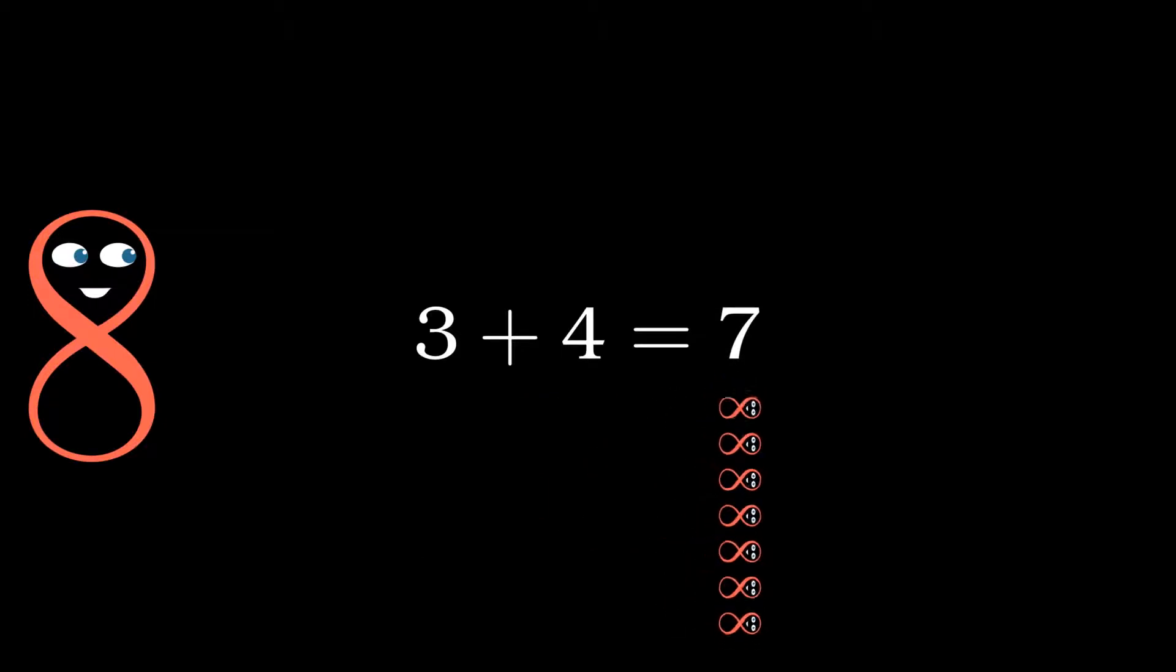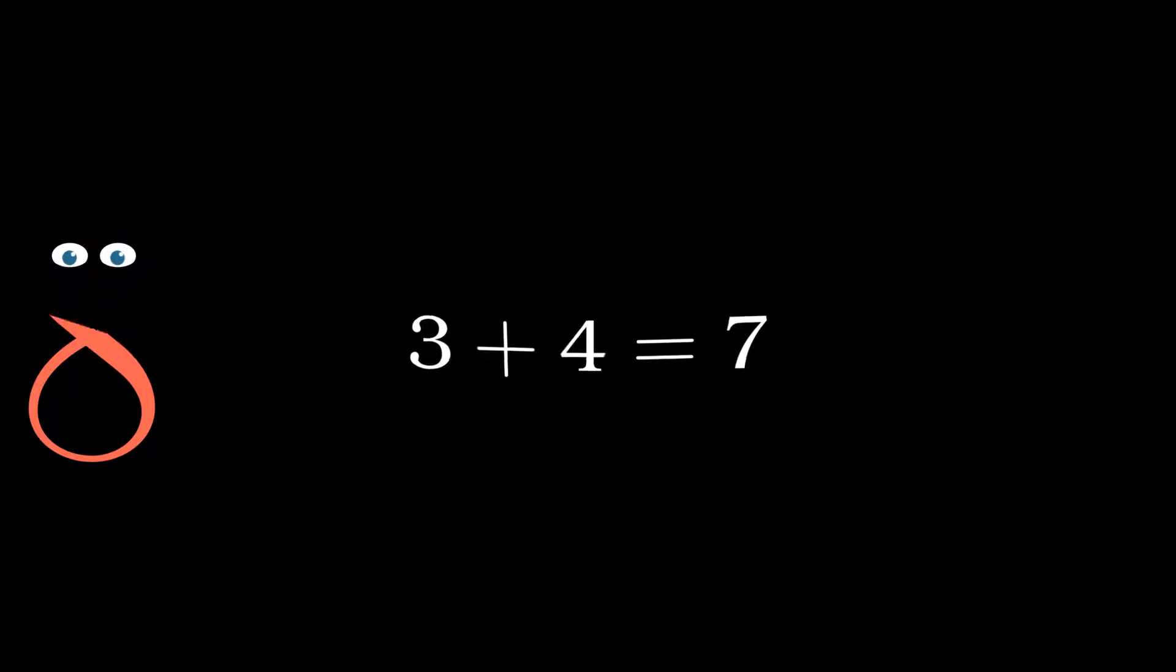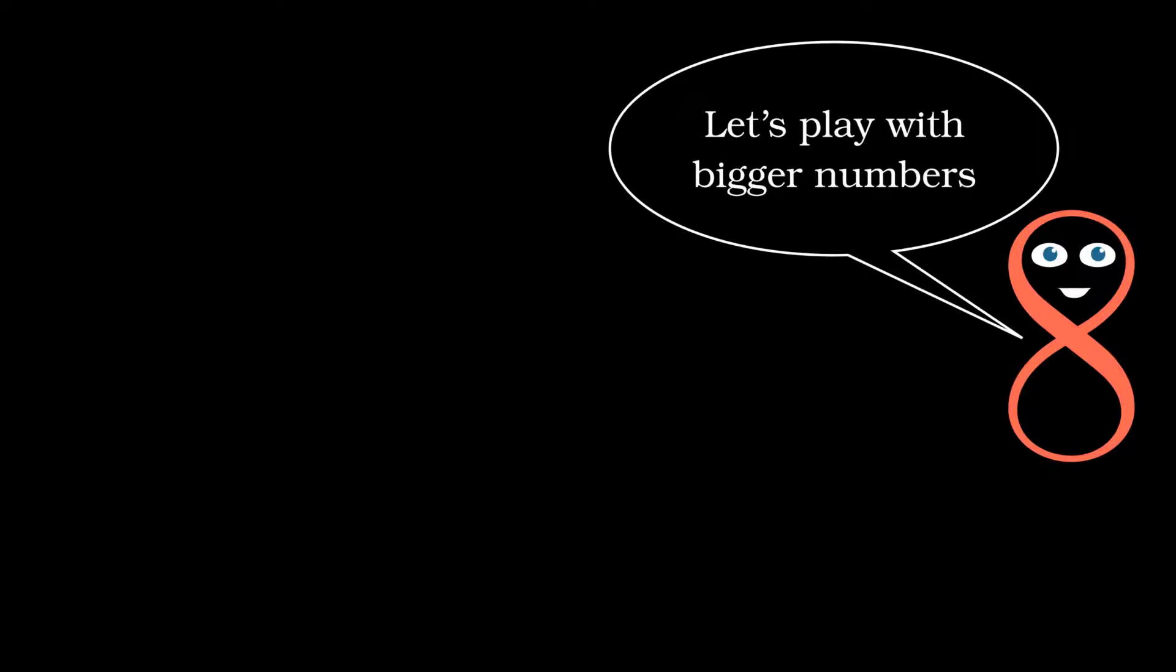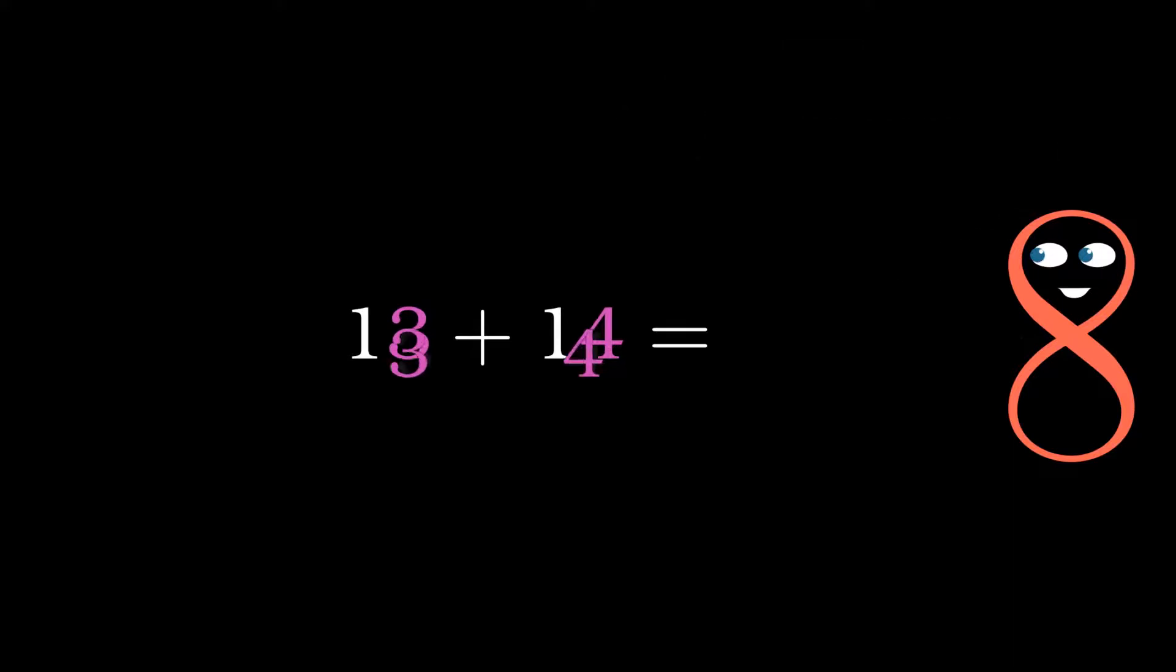But what can we do if the numbers are bigger? Imagine we have to add 13 and 14. In this case, we add 3 and 4 first, so 7, as we explained in the previous example, and then we have 1 plus 1, which equals 2, so the result is 27.